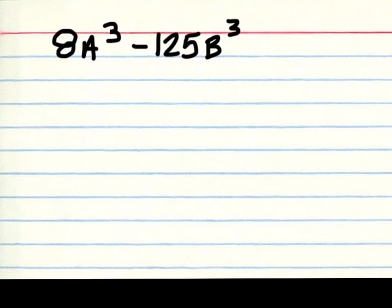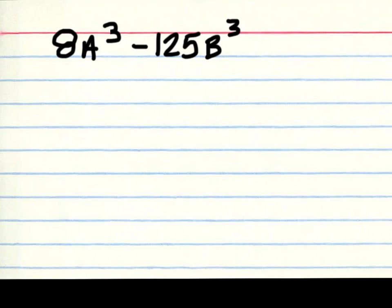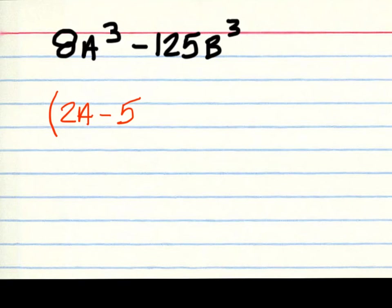On this problem, first check to see if there is a difference of two cubes. Yes, it is subtraction. Is 8 a perfect cube? Yes. Is a cubed a cube? Yes. Is 125 a perfect cube? Yes. And b cubed? Yes. So step one: the cube root of 8 is 2, the cube root of a cubed is a, the cube root of 125 is 5, and the cube root of b cubed is b.